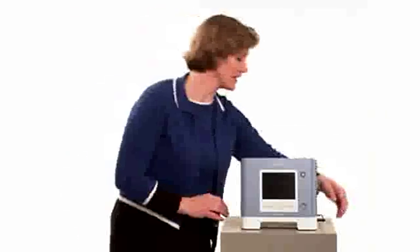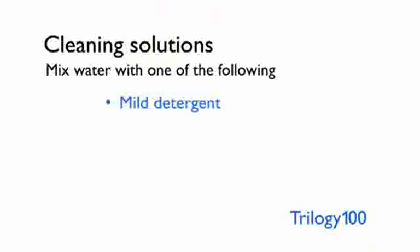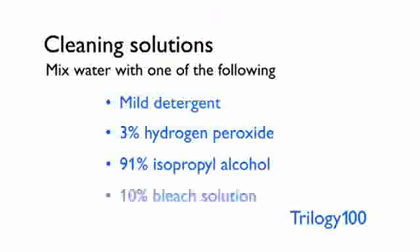The Trilogy 100 ventilator is a medical device, so it is important to keep it clean. To avoid electrical shock, begin by unplugging the ventilator. You can wipe down the outside of Trilogy with water mixed with one of several cleaners: mild detergent, 3% hydrogen peroxide, 91% isopropyl alcohol, or a 10% bleach solution. Dip a rag into the cleaning solution and wring it out until it is just damp, not dripping wet. Wipe down the outside of the ventilator and detachable battery pack, being careful not to allow liquid to drip inside. Be particularly cautious when cleaning the display, as it can be scratched by abrasive cleaners. After washing, use a soft dry cloth to remove any residual cleaner. Allow the device to dry completely before plugging in the power cord.